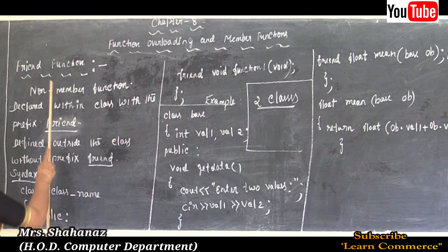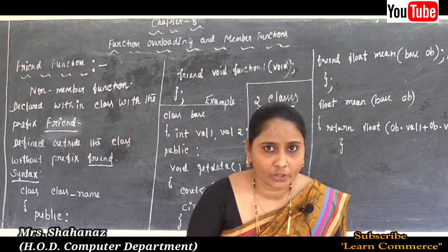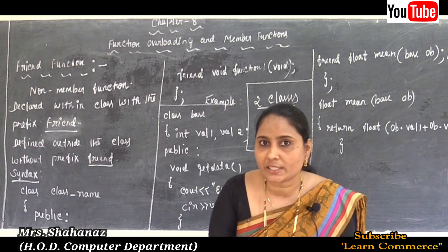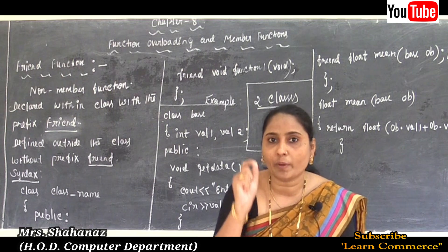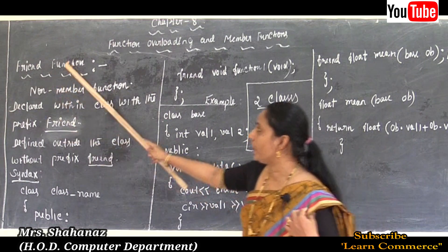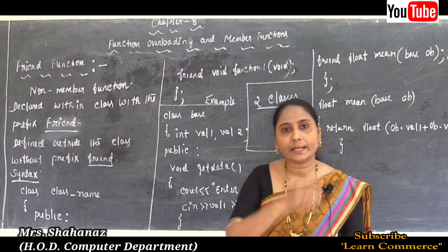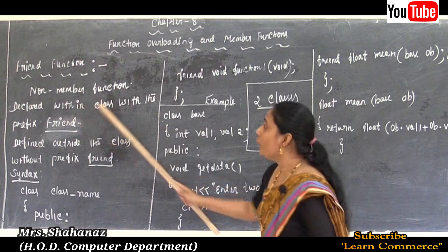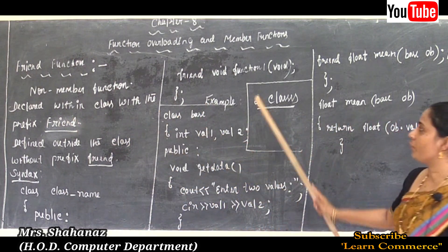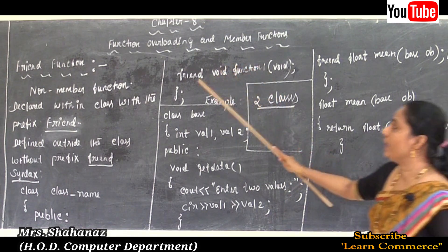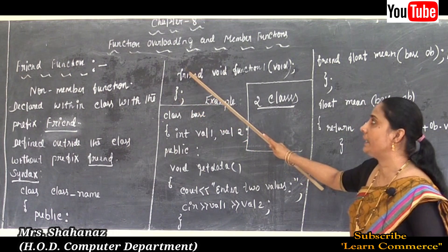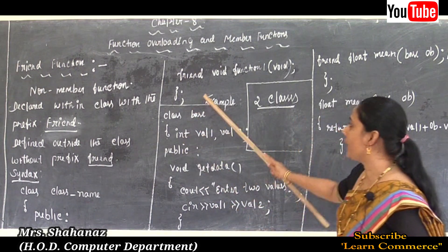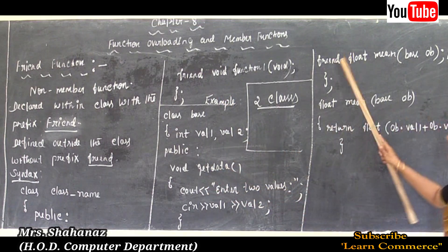The friend function is a non-member function of a class — it is not a member function of the class, but it is a friend of the class. The friend function is declared within the class. In this example, the function is declared within the class before the closing flower bracket and semicolon, and it should be defined outside the class.